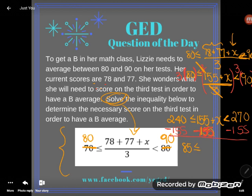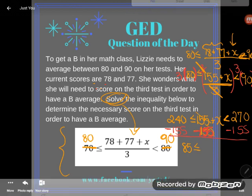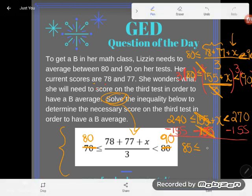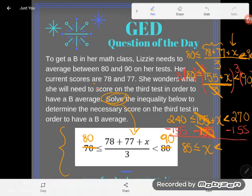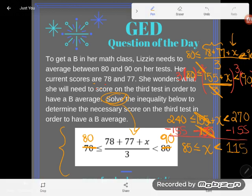Is less than or equal to, and then over here, 155 minus 155 is just 0, and 0 plus X of course is X. So I have just my X left and my inequality sign, and then 270 minus 155 is 115.